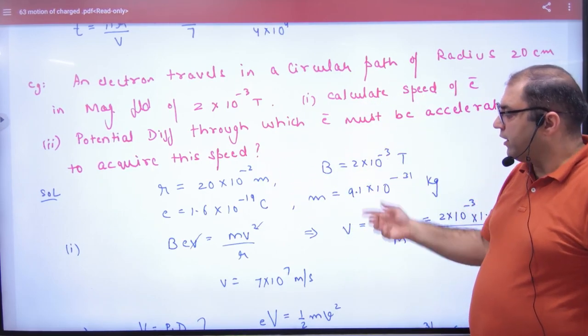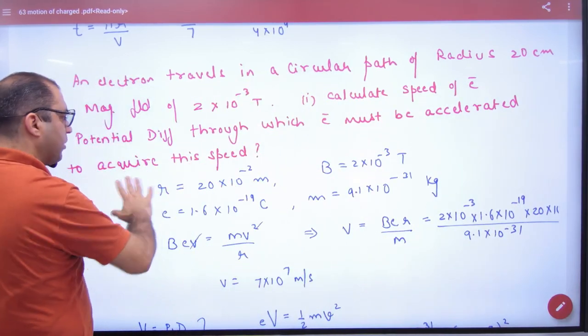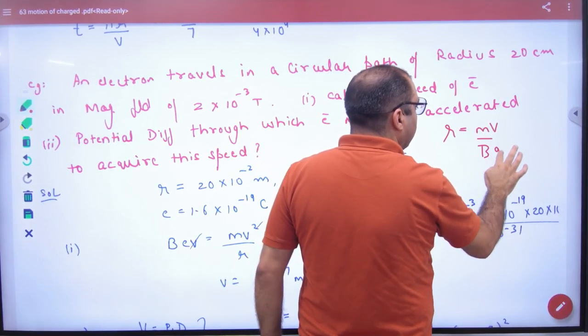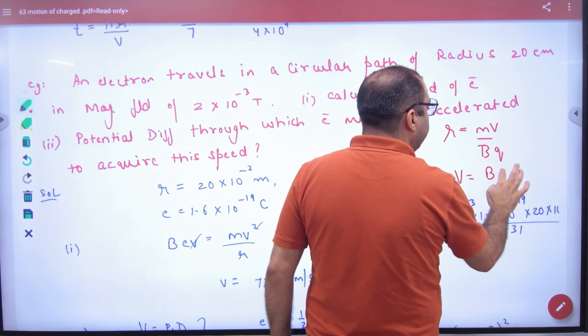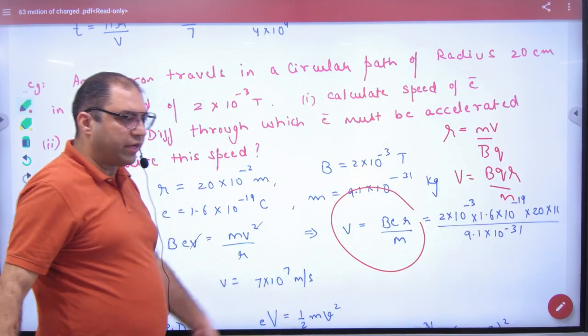So what is given? What is the radius? Don't do anything about this please, go straight ahead. What is the radius? mv divided by bq. So what is the value of speed? bqr by m.